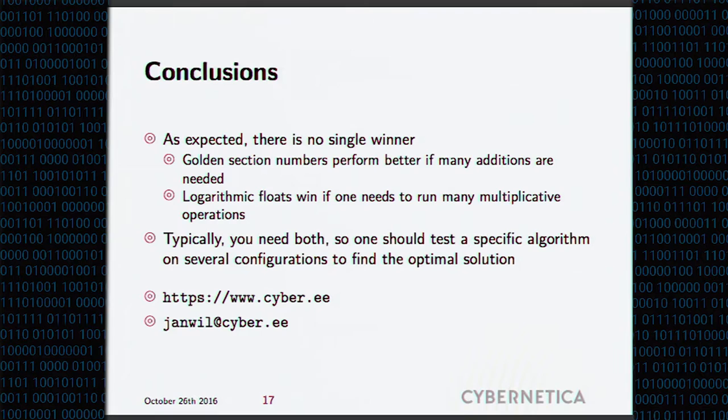So the conclusions, as expected, there is no single winner. Golden section numbers perform better if we need many additions. Logarithmic floats behave better if you need many multiplications. What you will typically use is both. So finding out which ones are the best for a given situation is actually up to the given situation. And I would say this is part of further work to try these implementations out in more complex settings like linear algebra for instance.